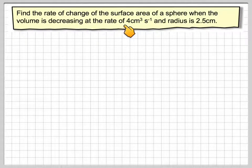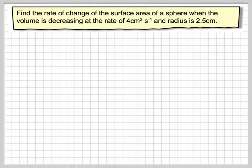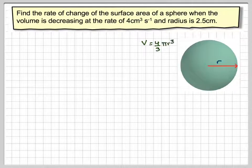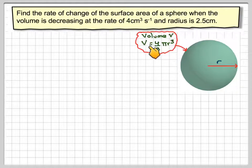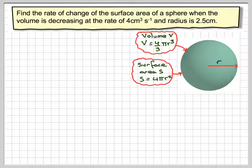Find the rate of change of the surface area of a sphere when the volume is decreasing at the rate of 4 cm³ per second and the radius is 2.5 cm. Here we have a sphere with a radius r. The volume of a sphere is 4/3 π r³ and the surface area S of a sphere is 4π r².